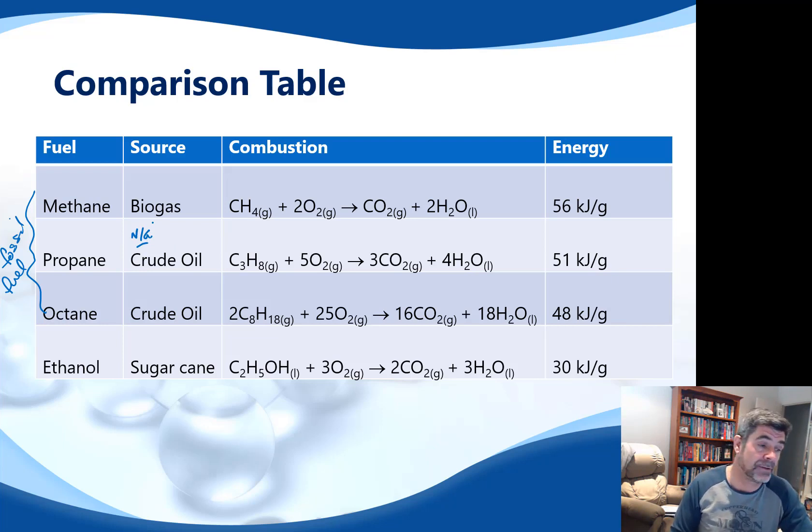Octane is a fraction obtained directly from crude oil. Methane is a type of biogas as well as being a component of natural gas. Ethanol is the biofuel in this particular example. It is sourced from sugarcane through the process of fermentation.